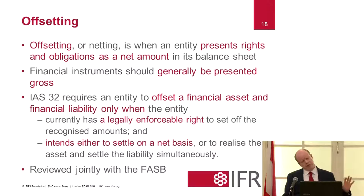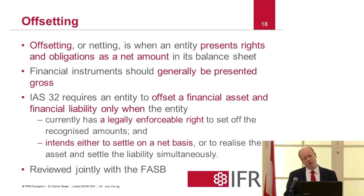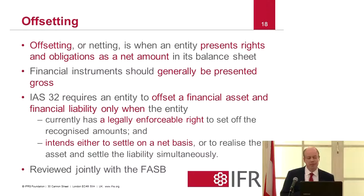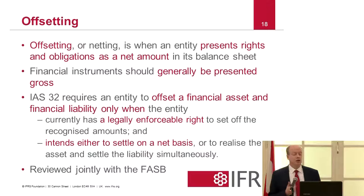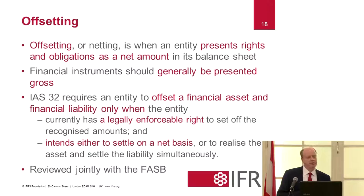The general principle is that financial instruments should be presented gross. IAS 32 has quite specific requirements as to when you can offset a financial asset and liability, and you can only offset when both of the following conditions are true: first, there must be a legally enforceable right to set off those recognised amounts, which might be contained in the contract such as an ISDA contract; and second, there must be an intention to settle on a net basis or realise the asset and settle the liability simultaneously.